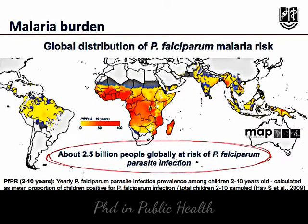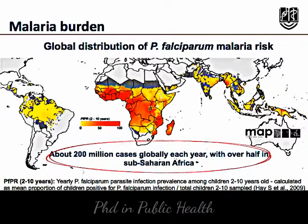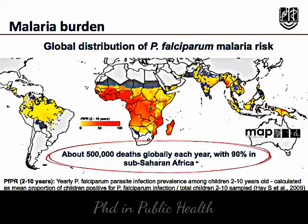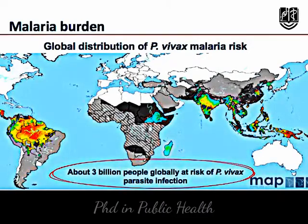Globally, about 2.5 billion people are at risk of Plasmodium falciparum parasite infection. About 200 million cases of Plasmodium falciparum occur each year, with over half in Sub-Saharan Africa. Plasmodium falciparum is responsible for 500,000 deaths each year, with over 90% in Sub-Saharan Africa, and most occurring in children under the age of five. Globally, about 3 billion people are at risk of Plasmodium vivax parasite infection.